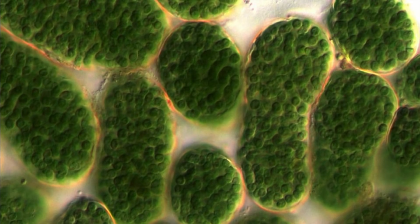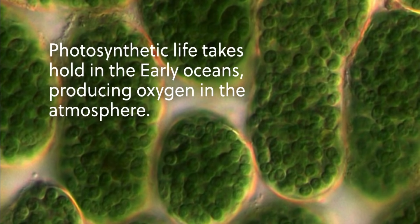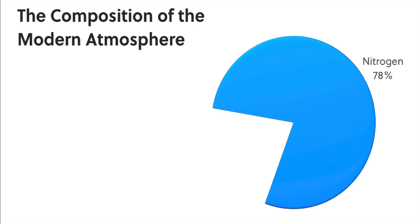It was in those oceans where photosynthetic life took hold, producing the early oxygen, replacing the large amounts of carbon dioxide. And that leads us to our modern atmosphere, which is composed largely of nitrogen, nearly 78%, with 21% oxygen and 1% other, including remaining carbon dioxide and water vapor.